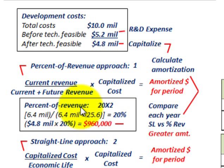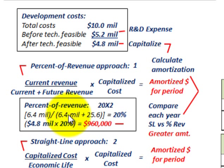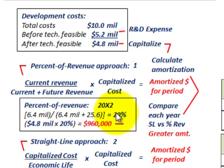For year 20X2 using the percent of revenue approach: we had revenues of $6,400,000 for the period. We divide that by total revenues — $6,400,000 current period plus $25,600,000 remaining future revenues — which equals $32,000,000. So $6,400,000 divided by $32,000,000 gives us 20%. We then take the capitalized cost of $4,800,000 times 20%, which gives us an amortized amount of $960,000.